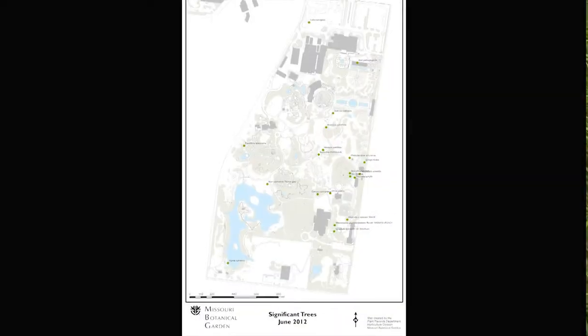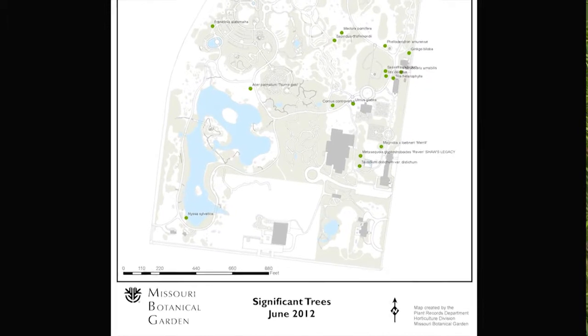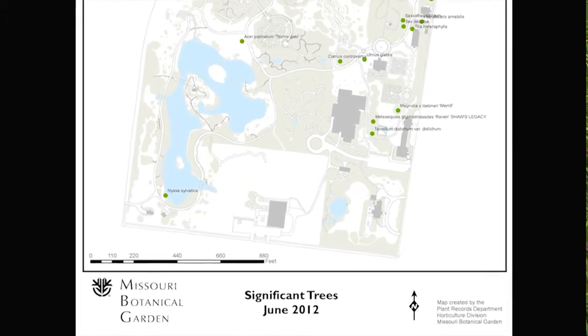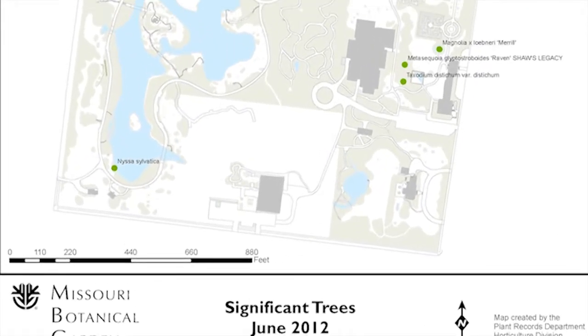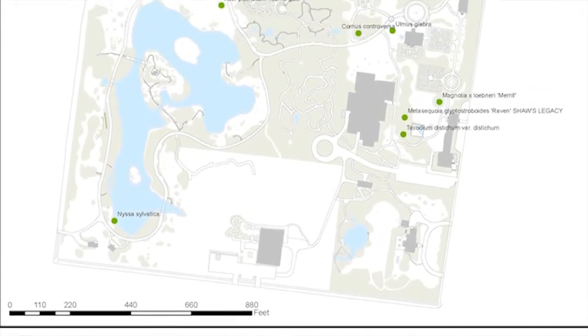At Missouri Botanical Garden we produce lots of different maps for our staff. These include maps for inventories — the most basic map would be just a map of what plants are located where. We also use GIS to produce maps for landscape design.